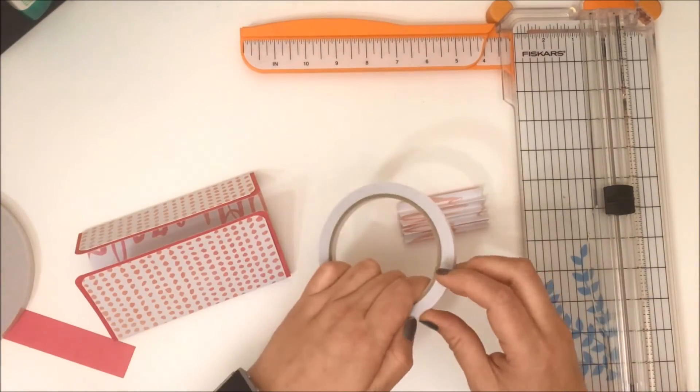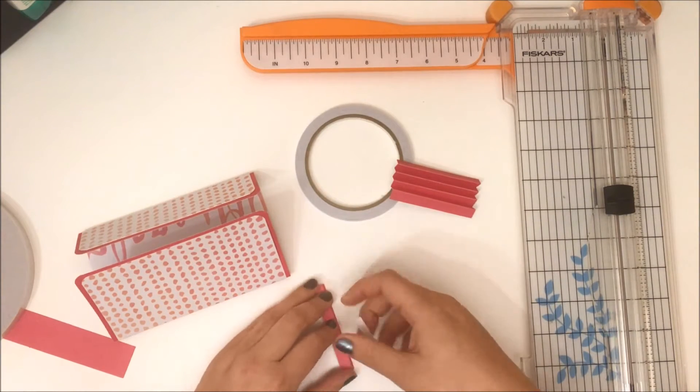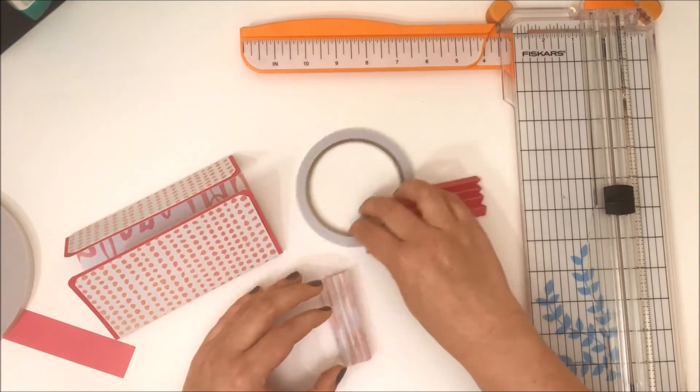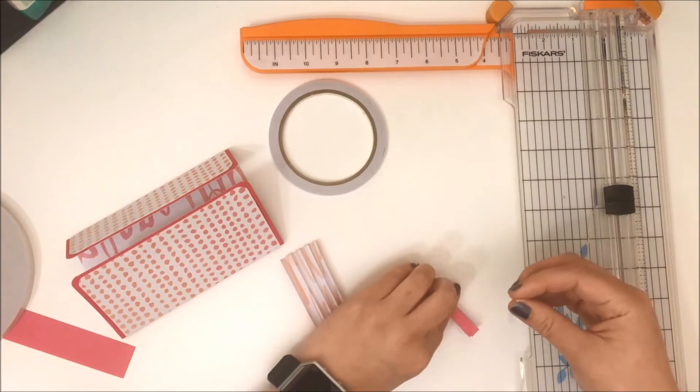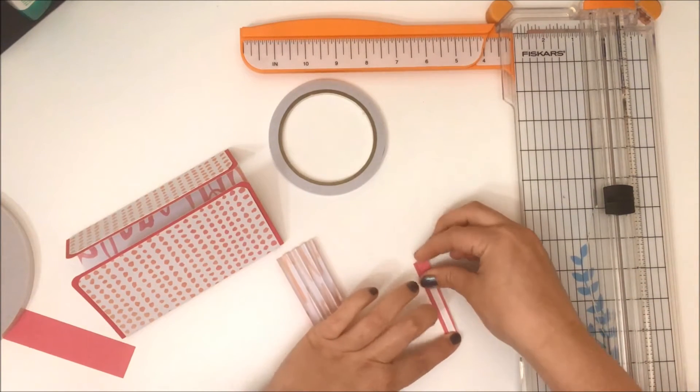To do that, I personally use double-sided tape. I find it the easiest to work with because it's an instant stick. I think if you had a snail tape runner you could probably use that too, but because they're quite thin, only three-eighths of an inch, using the double-sided tape was less fiddly.